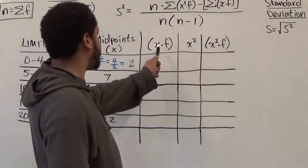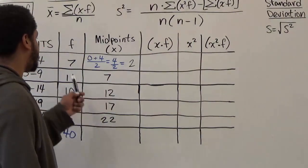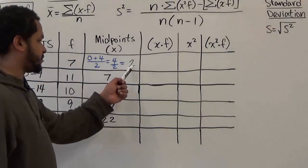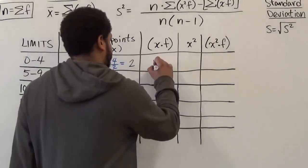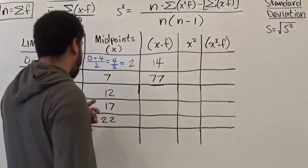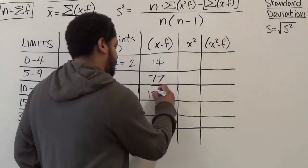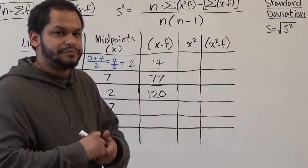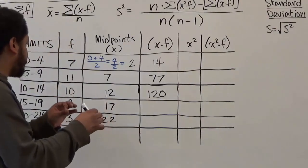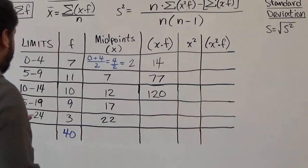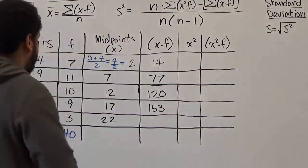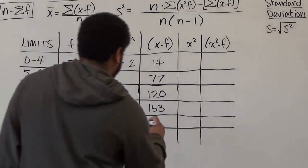The next values we're going to compute are x times f — taking the midpoints and multiplying by each corresponding frequency. The first product is two times seven, which gives us fourteen. Then we have seven times eleven, which is seventy-seven. Then twelve times ten, which is one hundred and twenty. Next is nine times seventeen, which gives us one hundred and fifty-three. Then three times twenty-two, which gives us sixty-six.